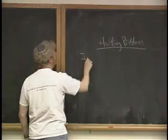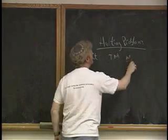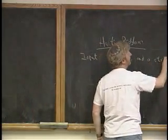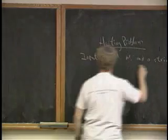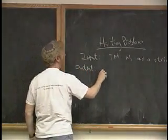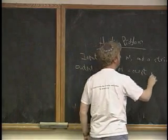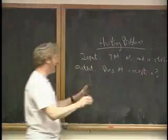The input is some Turing machine and a string that it's supposed to run on. And the output, yes or no, does M accept x? Does it stop and say yes?